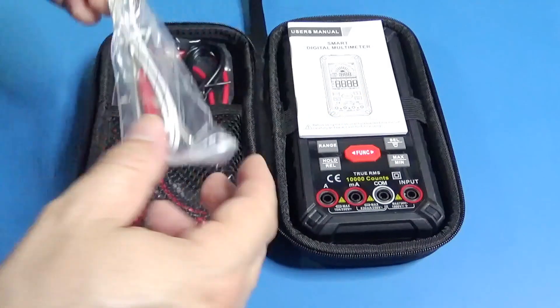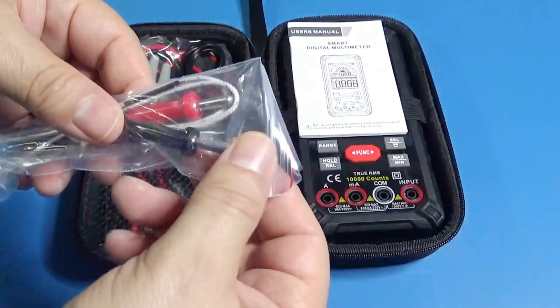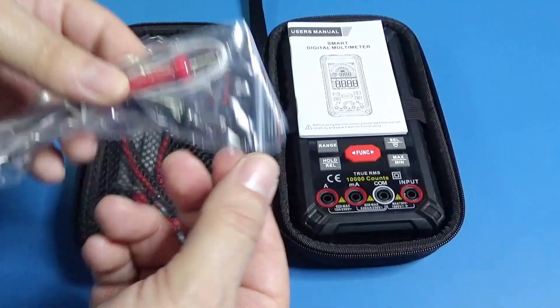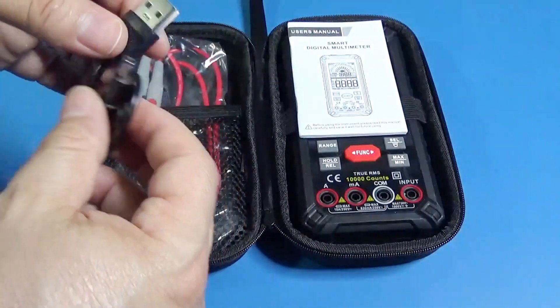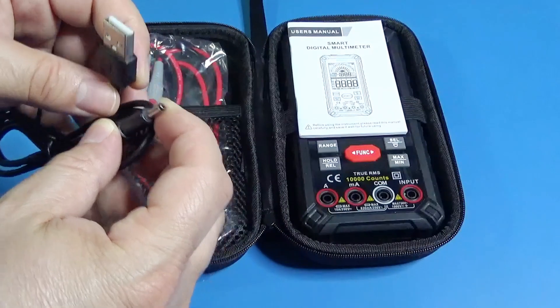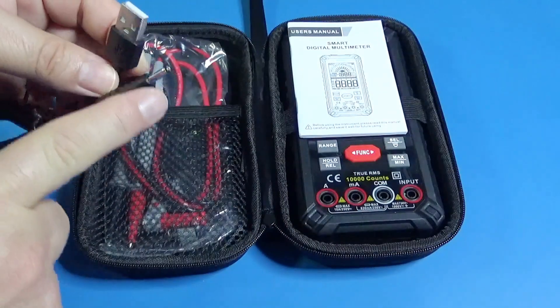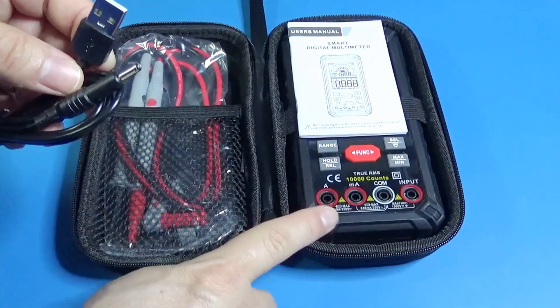It comes with a standard thermocouple with banana connectors and this is interesting - there is a USB cable for charging the multimeter. That means the battery in this case is inside of the multimeter.